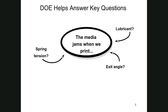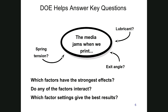DOE helps us answer key questions. For example, with a media jam — the printer is stuck — is it because of the spring tension, the exit angle, the lubricant? There are lots of different factors. We're trying to figure out which factors have the strongest effects, not just which factors influence the outcome. Also, is there any interaction between the factors? Are they acting independently, or do some combinations create a different response? Ultimately it helps us determine which factors to adjust and to what settings to get the best performance results.